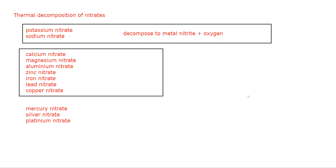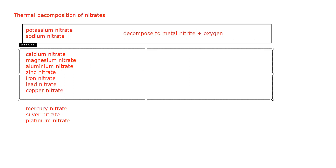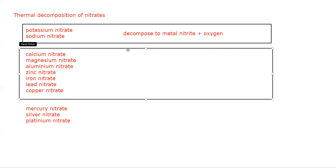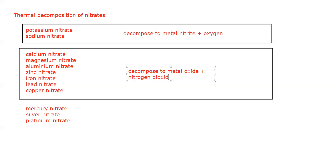But if we supply heat energy to calcium, magnesium, calcium nitrate, zinc nitrate, or aluminium nitrate, this will result in the formation of — or it will decompose to — metal oxide, plus nitrogen dioxide, plus oxygen.